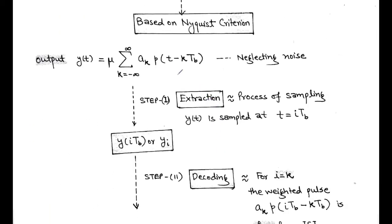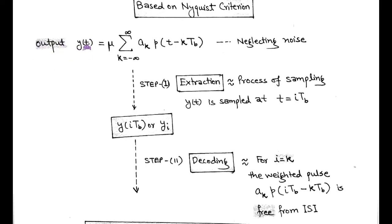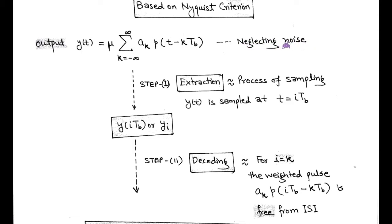To understand this, we consider the output of the overall pulse spectrum, called y(t), which equals mu times the summation of a_k times the function of (t minus k*Tb), taking the limit k equals minus infinity to plus infinity. Here, we assume that the effect of noise is neglected. The Nyquist criteria is based upon two steps.